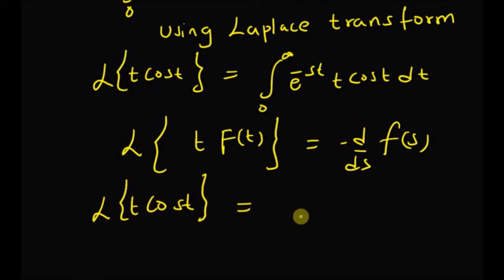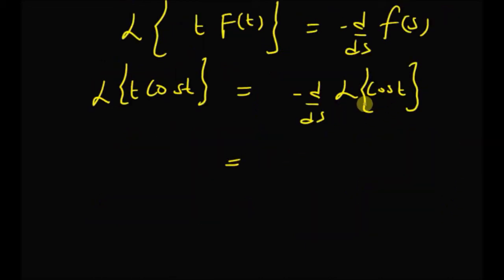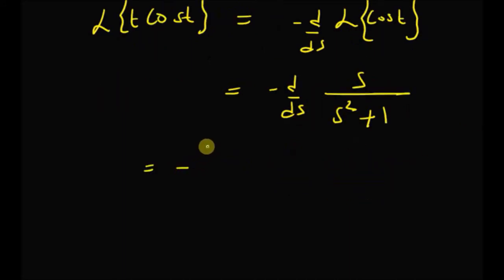We know that the Laplace transform of cos(t) is s/(s²+1). So we need to compute minus d/ds of s/(s²+1). Applying the quotient rule of differentiation, we differentiate this expression.